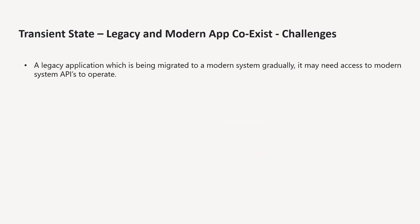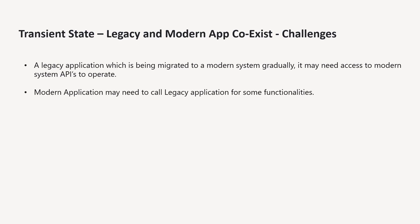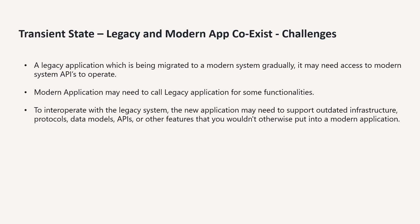The first issue is that when migrating from legacy to modern application, it might need to access some system APIs to operate because both applications together are trying to fulfill the business, so they must communicate with each other. The second issue is that the modern application might need some data or access rights to the legacy application for certain functionalities.